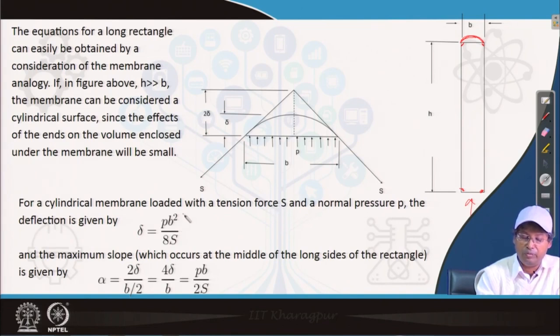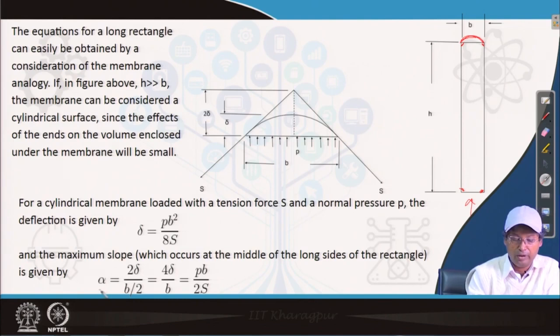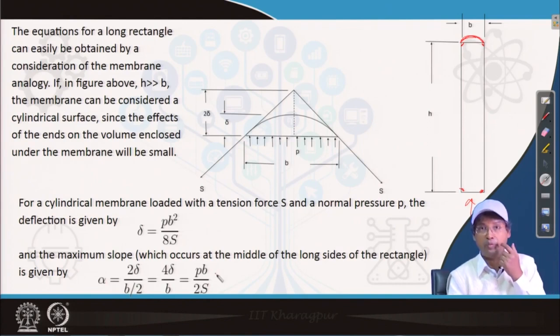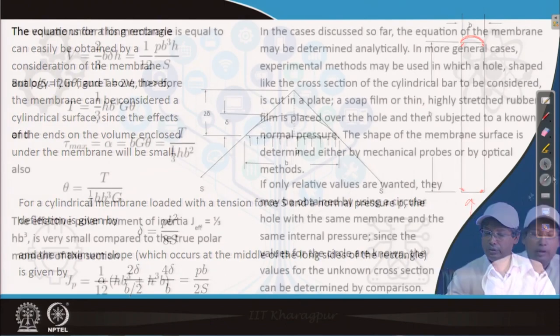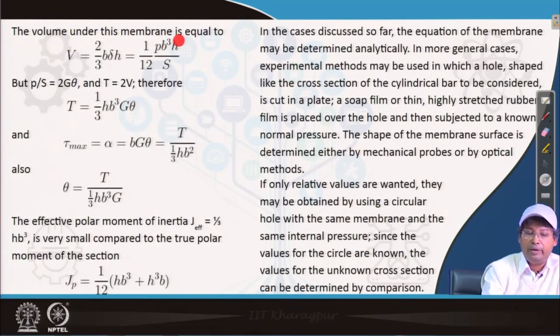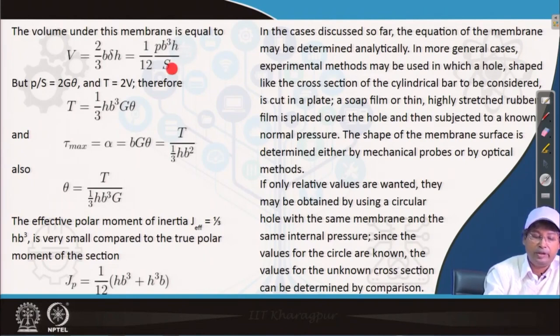For a cylindrical membrane loaded with a tension force S and a normal pressure P, the deflection is given by δ = Pb²/8S. This is a standard value. The maximum slope is α = 2δ/b = Pb/2S. The volume under the membrane is equal to V = 2/3 bδh = 1/12 Pb³h/S. Since we have the relation P/S = 2Gθ and T = 2V, if we combine those we get the equation T = 1/3 hb³Gθ. And the τ max equals α, and if we substitute the values we have observed here is equals to T/(1/3 hb²).